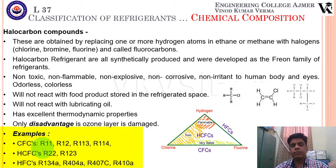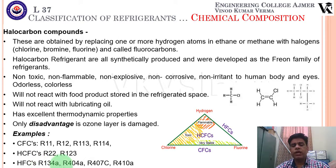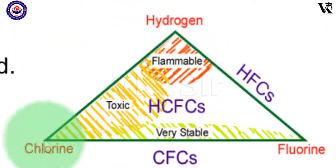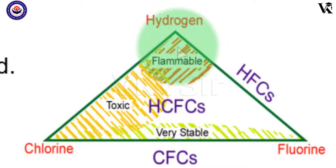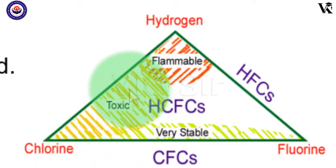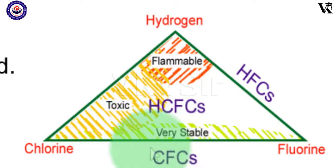Within halocarbons, there are subcategories. CFCs (chlorofluorocarbons) include R11, R12, R113, R114. HCFCs include R22 and R123. HFCs (hydrofluorocarbons) include R134A, R404A, R407C, and R410A. R134A is widely used in current scenarios. As we increase hydrogen content, flammability increases; as we increase chlorine content, toxicity increases. CFCs are very stable, which is why they were preferred earlier.